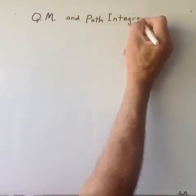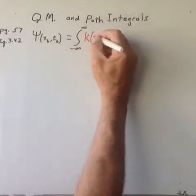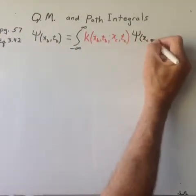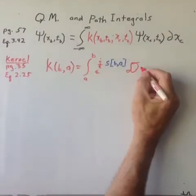We begin with the general one-dimensional form of Feynman's integral wave equation shown on page 57. The kernel shown in red is then given by the path integral on page 35 using the action shown in blue.